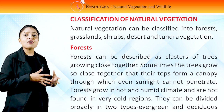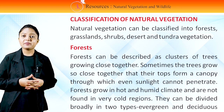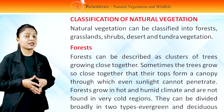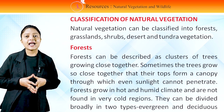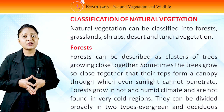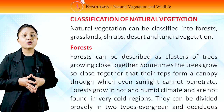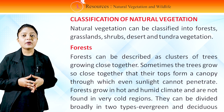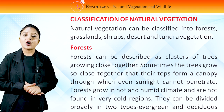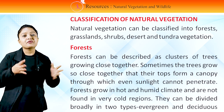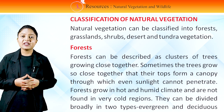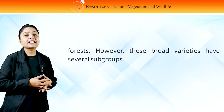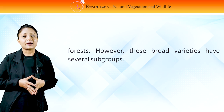Natural vegetation can be classified into forest, grasslands, shrubs, deserts and tundra vegetation. Forests can be described as clusters of trees growing close together. Sometimes the trees grow so close together that their tops form a canopy through which even sunlight cannot penetrate. Forests grow in hot and humid climates and are not found in very cold regions. They can be divided broadly into two types: evergreen and deciduous forest, with several subgroups.